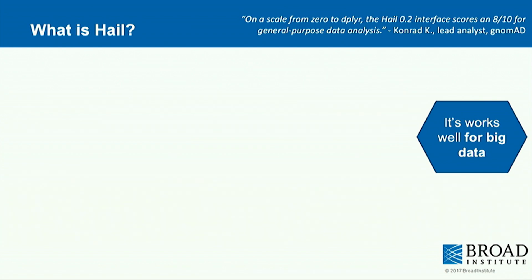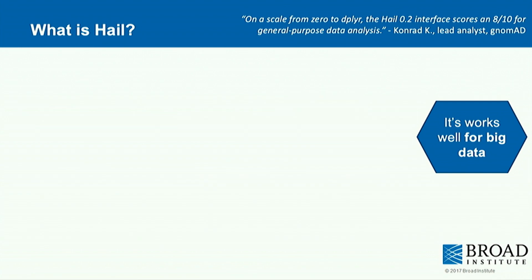Hail works really well for big data. VCF tools and Plink work well for analytics, but Hail takes that and scales it to much larger datasets. A great personal example: I had about 5,000 genomes to process. Running it on Plink would have destroyed our cluster, and parallelization would have been slow.